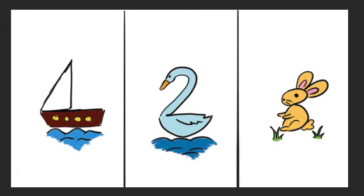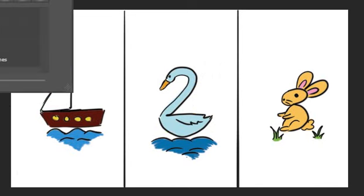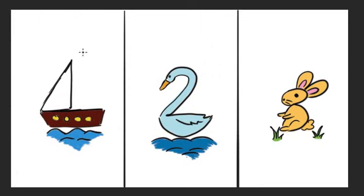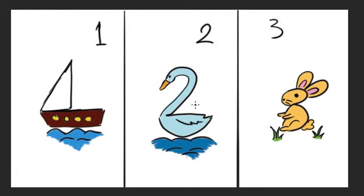We have three things. From number one, from number two, and from number three — we drew three things: one, two, three — boat, swan, and rabbit. I hope you like it. See you next time. Bye!